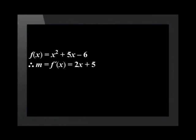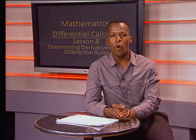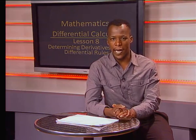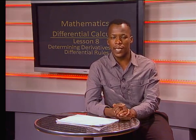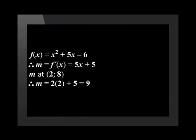Therefore, the derivative of x squared plus 5x minus 6 is equal to 2x plus 5. In order to determine the gradient at the point 2 and 8, we substitute the x value of 2 into the gradient expression. Therefore, m, the gradient, is equal to 2 multiplied by 2 plus 5. That gives us a gradient value of 9.